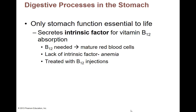We need the intrinsic factor to absorb vitamin B12 and make red blood cells. If you don't have the intrinsic factor, you can't make red blood cells — that's one way you can develop anemia. If you had to have your stomach removed due to stomach cancer or severe damage, they would have to give you vitamin B12 injections, because you're not going to absorb it from food — you would have to inject it right into your blood supply to make regular red blood cells.